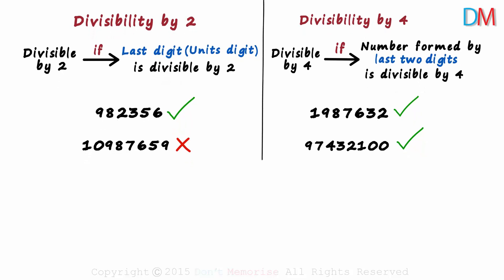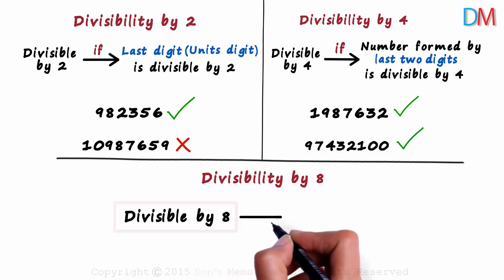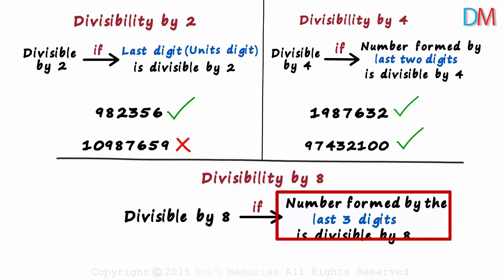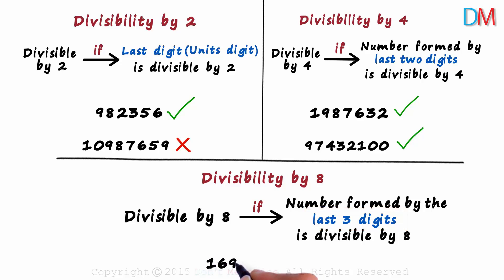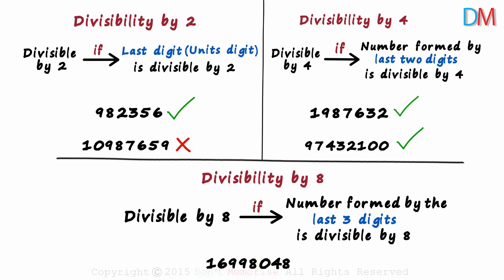And now we come to the last divisibility rule of this session: divisibility by eight. A number is divisible by eight if the number formed by the last three digits is divisible by eight. Look at the number 16,998,048. Is it divisible by eight? The last three digits are zero, four, eight — forming the number 48. And 48 is divisible by eight, so this huge number will also be divisible by eight.